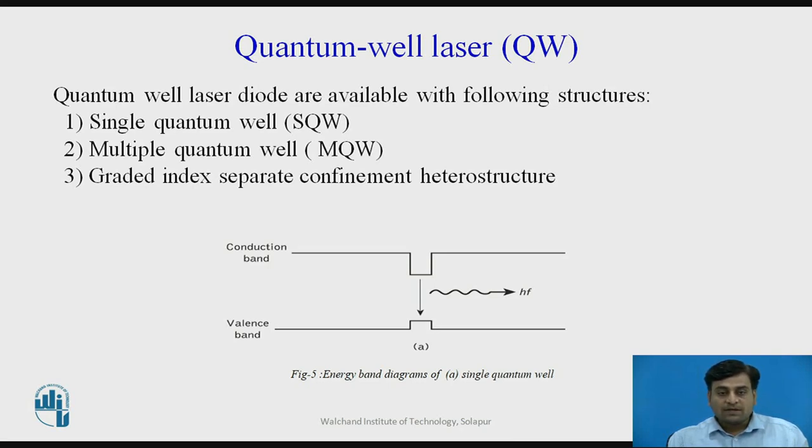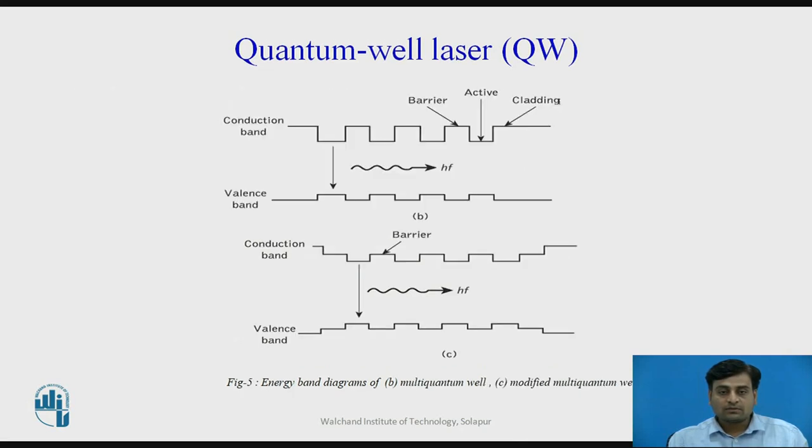The layers separating the active region are called barrier layers. The energy band diagram of active region of single quantum well structure is shown in figure number 5a. Figure 5b shows energy band diagram of multi quantum well structure.